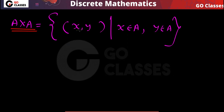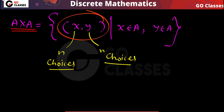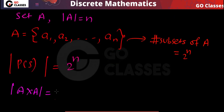In every ordered pair, for x you have total n choices because x can be anything from A, and for y you also have n choices because y can be anything from A. So the total number of ordered pairs possible is n×n. The cardinality of A×A is n². In any ordered pair, the first element comes from A with n choices and the second element comes from A with n choices, so the cardinality of A×A is n².